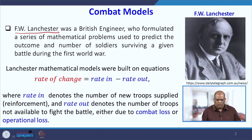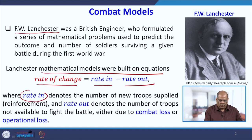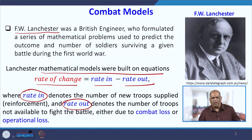His mathematical models were built on the equation that the rate of change is equal to rate in minus rate out, where rate in is the number of troops that are supplied and rate out is the number of troops that cannot take part in the war — either they are dead, injured, or suffering from something that prevents them from participating.